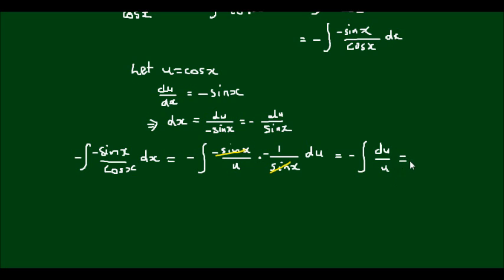which we know the result as negative of the natural log of the absolute value of u plus an integration constant c. And if I was to substitute u for cos(x) back in, I shall get negative ln of the absolute value of cos(x) plus c.